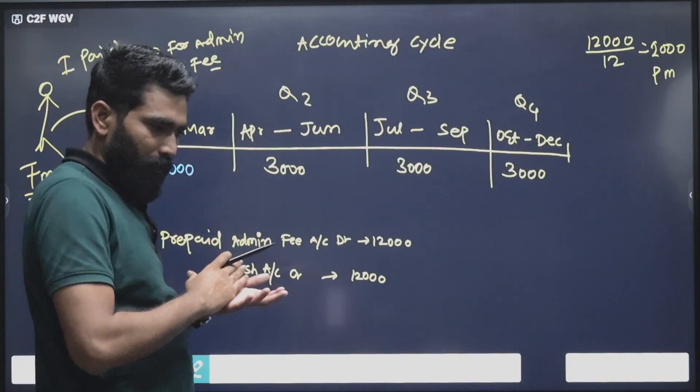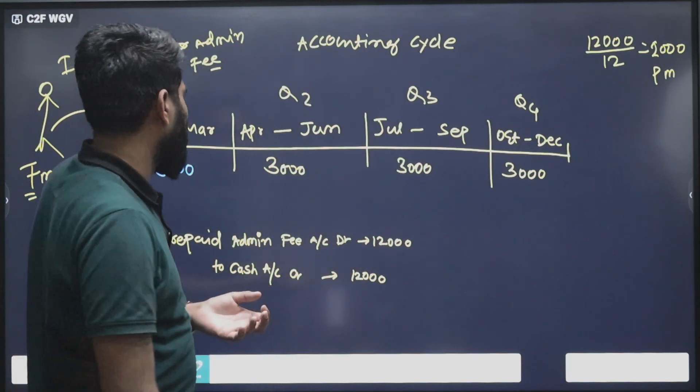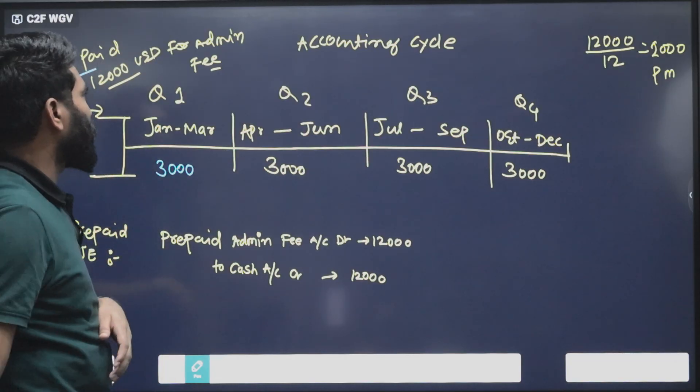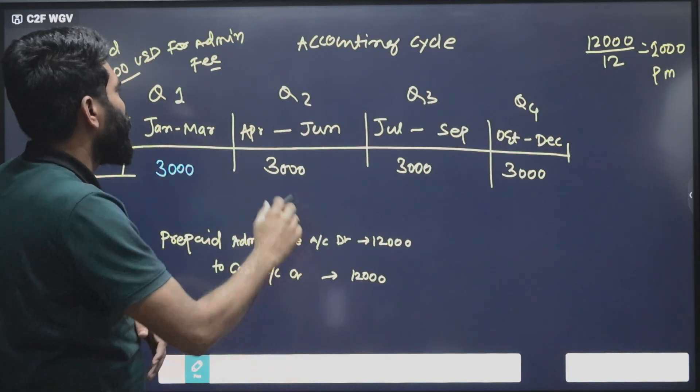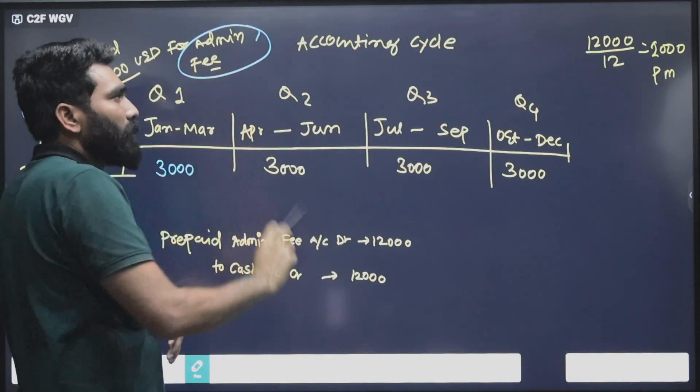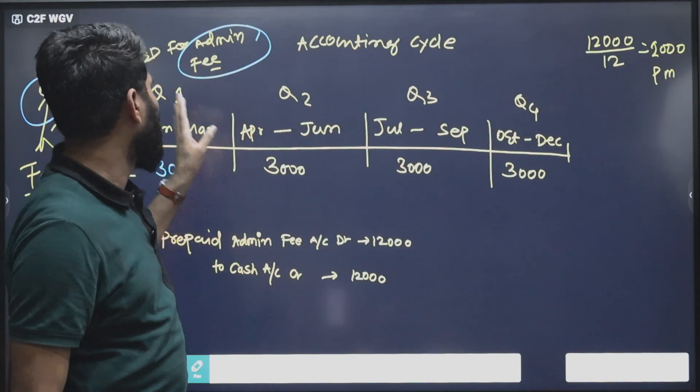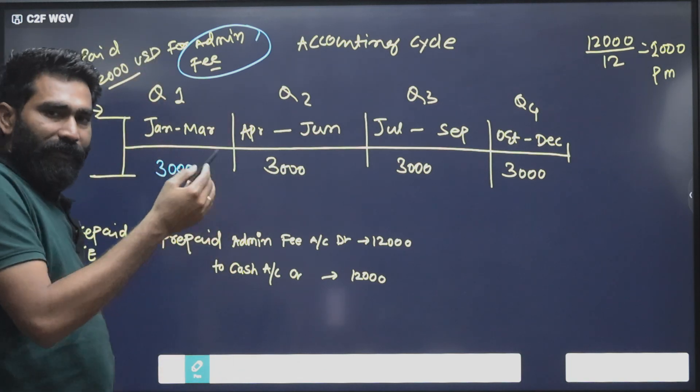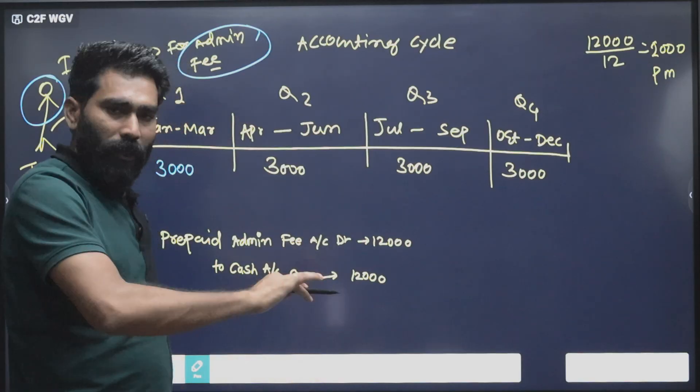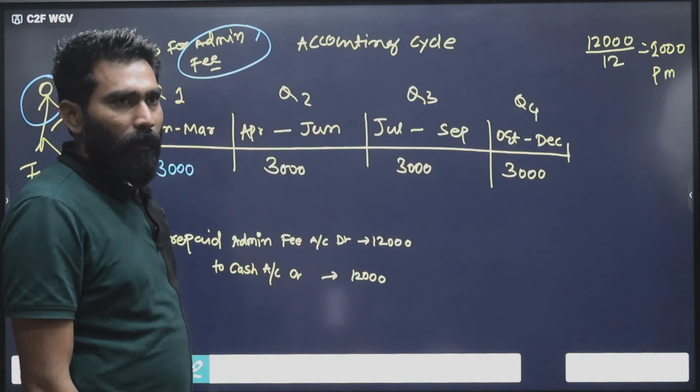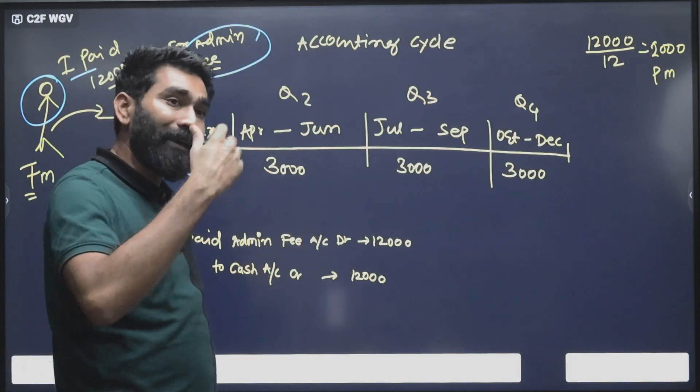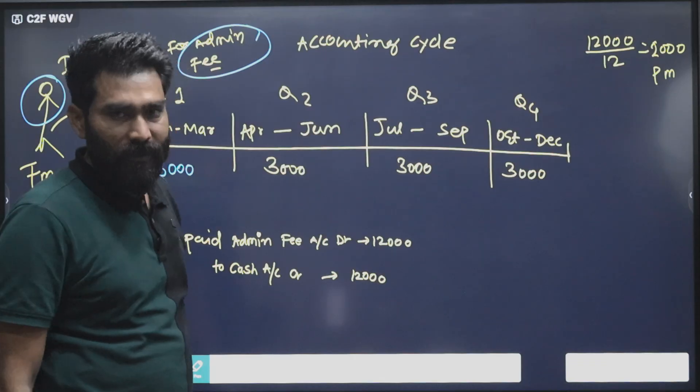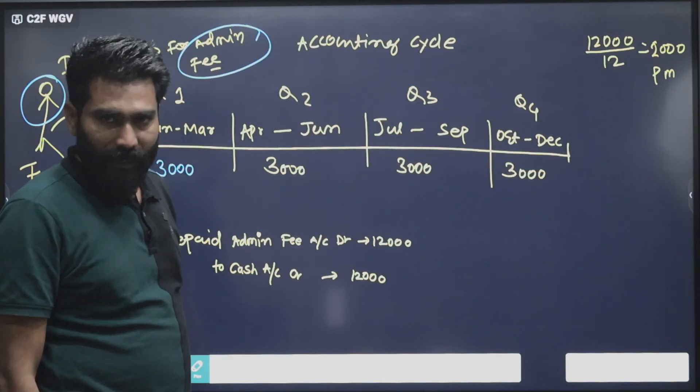Let's take an example to understand this better. Let's say a fund manager has paid $12,000 admin fee to Apex Services. In this fund we have quarterly accounting, so every quarter financial books will be closed and financial statements will be produced.